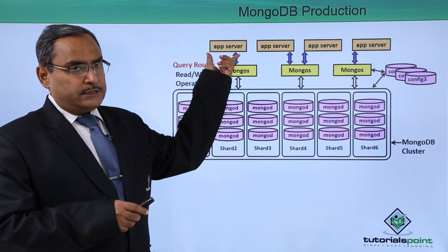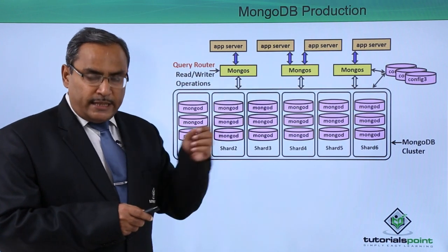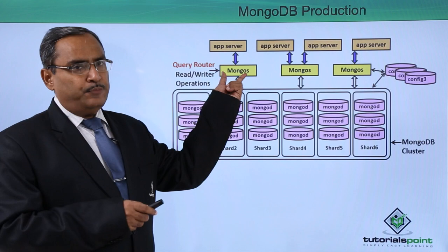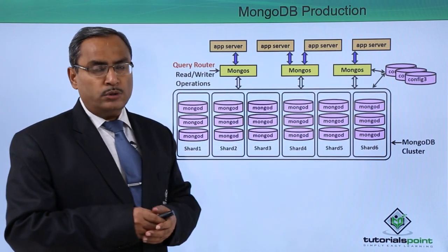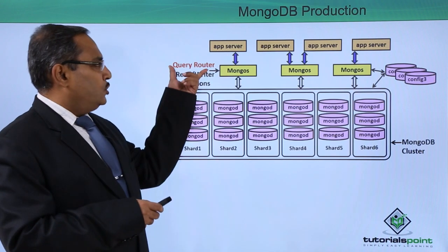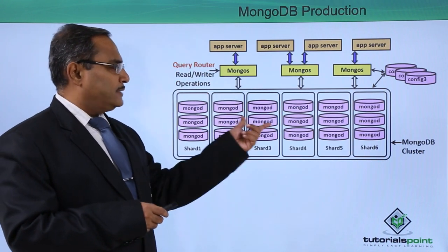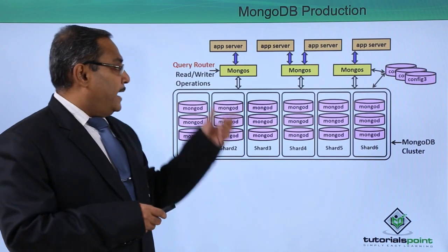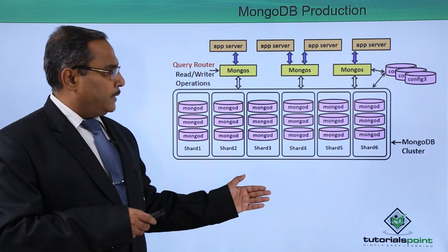These are the application servers. Multiple application servers are there, and they are interacting with Mongos, that is the client process. Mongos are nothing but the client processes. Through the query router, these Mongos will be accessing the MongoDB cluster and performing the read and write operations on them.